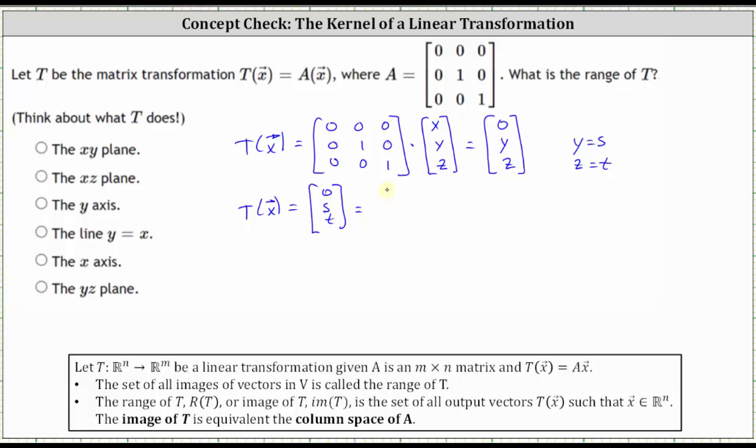Which we can write as S times the vector (0, 1, 0) plus T times the vector (0, 0, 1).